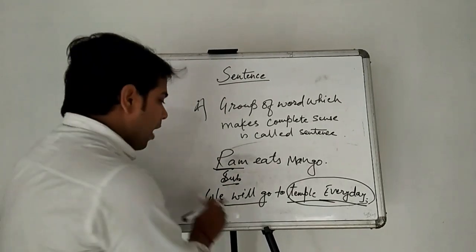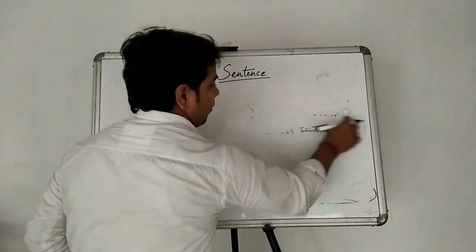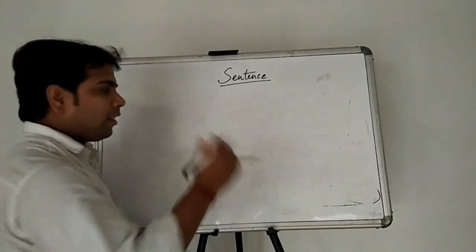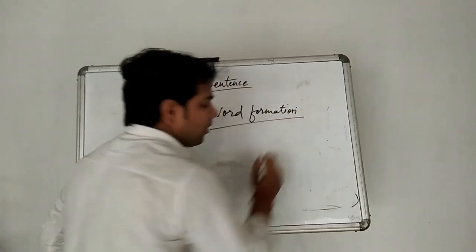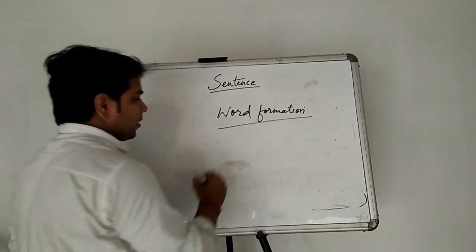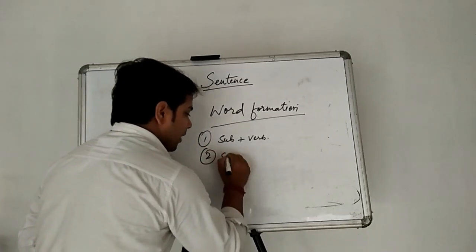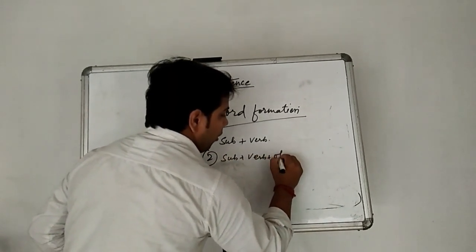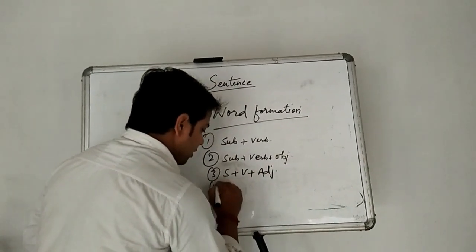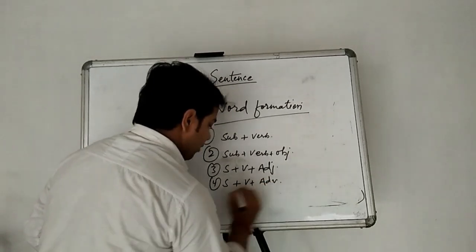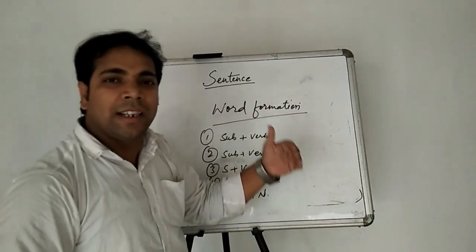Now let us come to sentence formation. In sentence formation there are five types. First is subject plus verb. Second is subject plus verb plus object. Third is subject plus verb plus adjective. Fourth is subject plus verb plus adverb. Fifth is subject plus verb plus noun. We have seen there are five types by which we can basically form sentences.